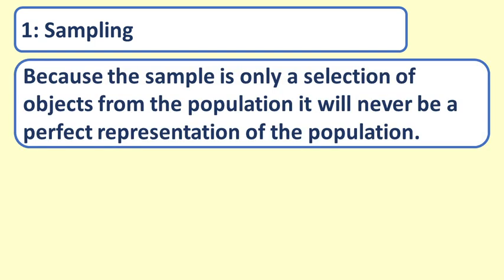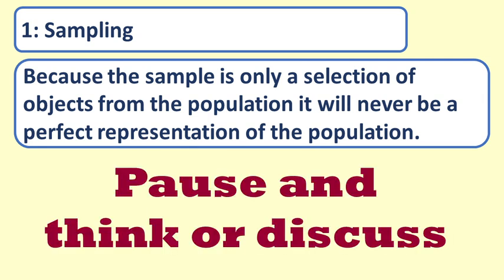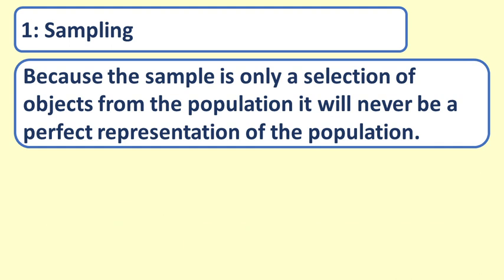Question 1: Sampling. Because the sample is only a selection of objects from the population, it will never be a perfect representation of the population. Answer: True. Sampling is like that. A sample can be the best representation we can get, but it will not be a perfect representation of the population.